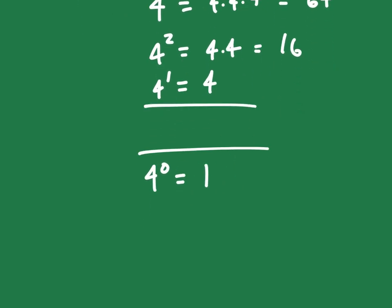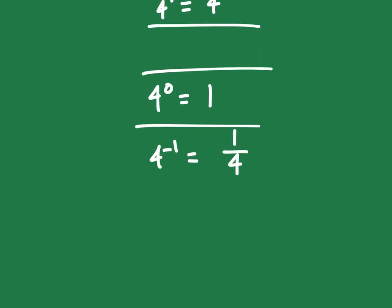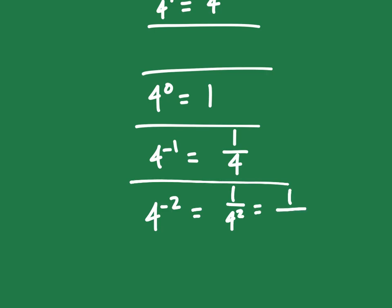If we have four to the negative one power, that's going to give us one over four. And if we do four to the negative two, that means we're doing one over four squared, which means that we're doing one over four times four, which gives us one over 16.